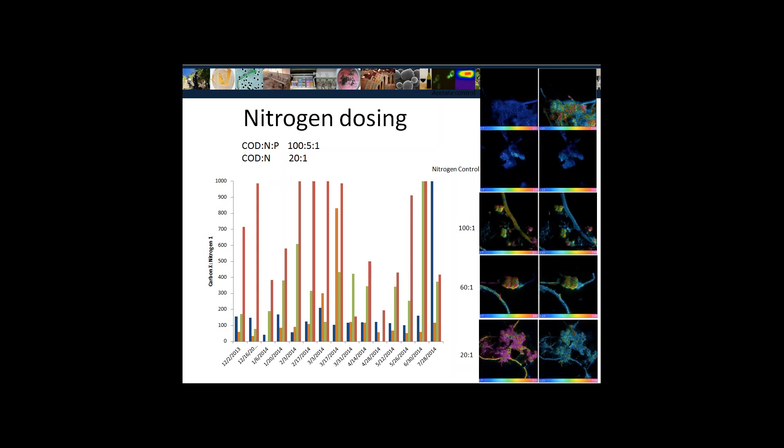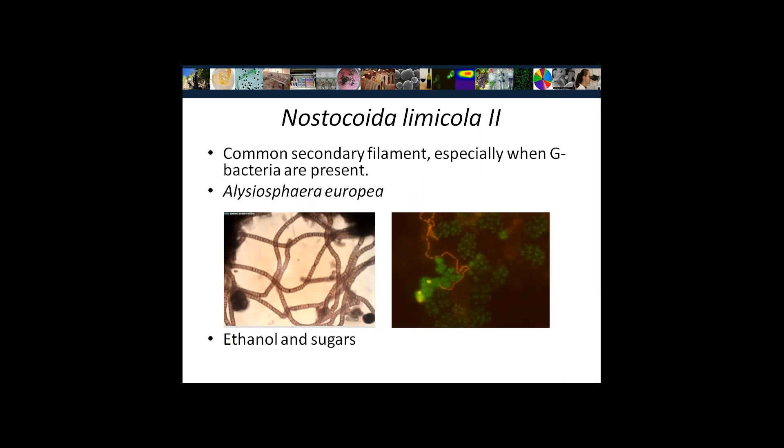We are doing further research in the lab using nanoSIMS — a modern molecular technique — to look at what COD-to-N ratio would actually work for the wine industry. At the moment we are recommending a 60:1 COD-to-N ratio. The second most common organism present was Nostocoida limicola 2, or more specifically Elsysiosphera europa. This is a common secondary filament that likes to grow alongside G bacteria, and it loves ethanol and sugars but does not use acetate.